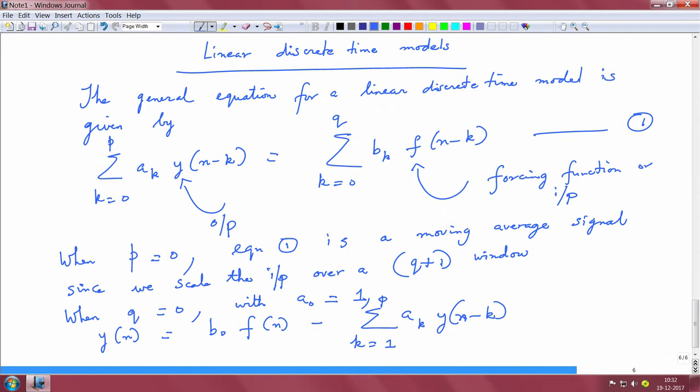This is essentially an auto-regressive model. This general equation is basically the auto-regressive moving average model, also called ARMA model. When p equals 0 it becomes moving average; when q equals 0 it becomes auto-regressive.